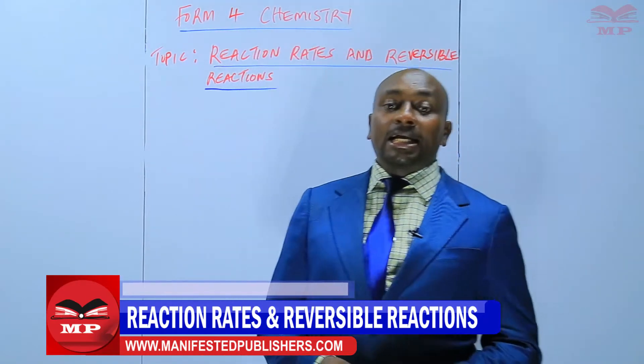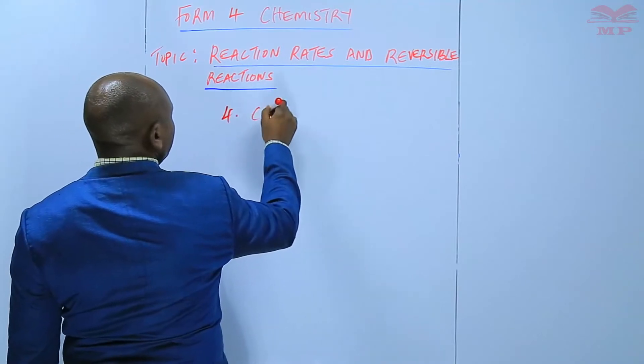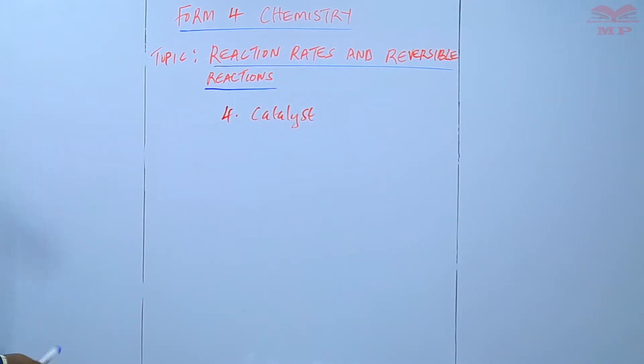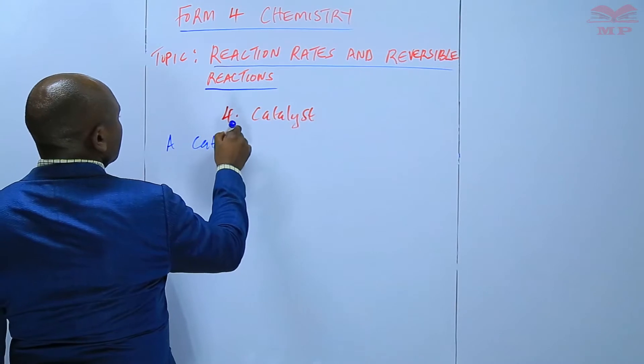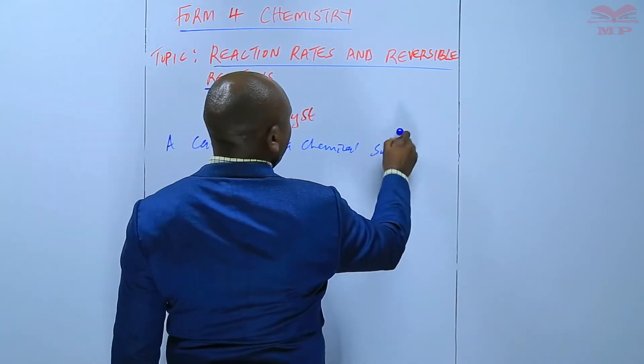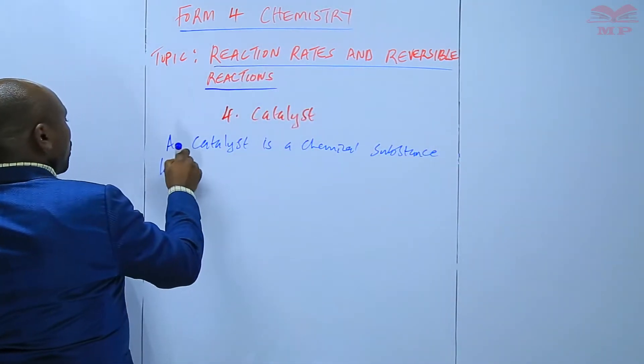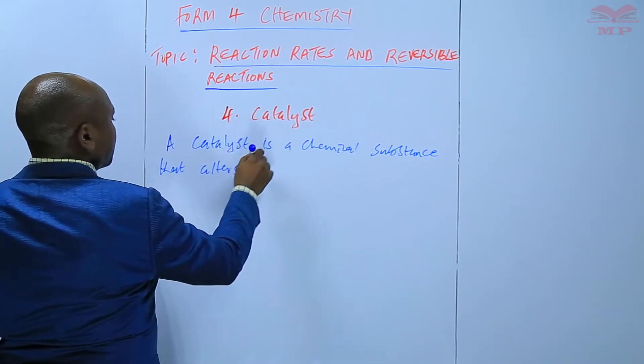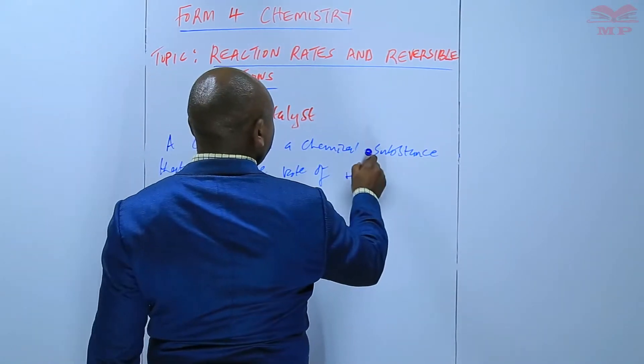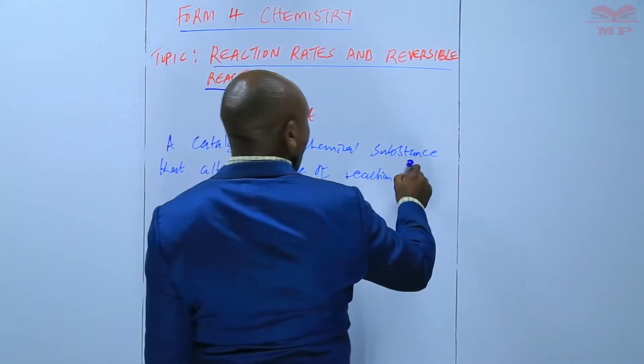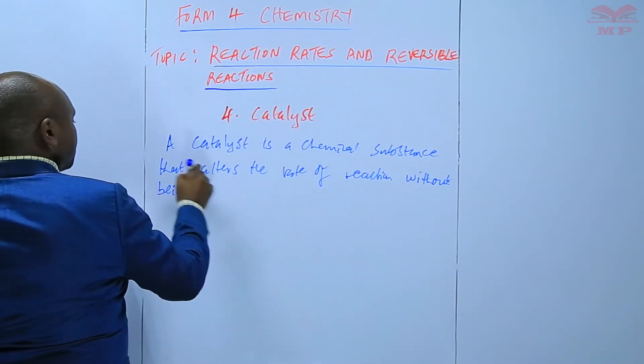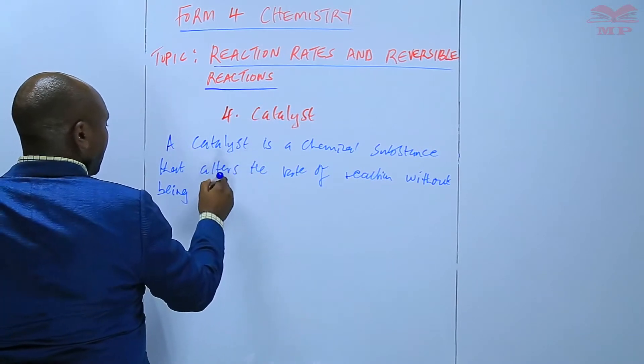And the fourth factor is catalyst. A catalyst is a chemical substance that alters the rate of reaction without being chemically affected.